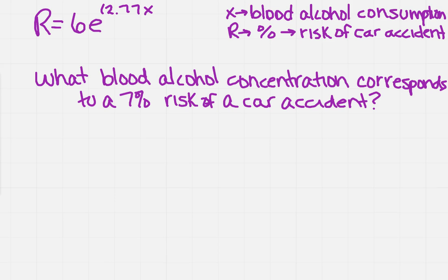So let's say that we want to know what is the blood alcohol concentration if we have a 7% risk of a car accident. So that means that R is going to equal 7%, so that's going to be our R.